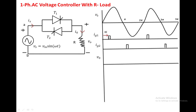From 0 to alpha, no device is conducting, so the output voltage becomes 0. At alpha, T1 turns on. Once T1 is on, the current passes from source through T1 and load and returns to the source. The load voltage equals the source voltage from alpha. At angle pi, because of the resistive load, the load current comes to 0, so the current through T1 also becomes 0, and T1 turns off at angle pi.